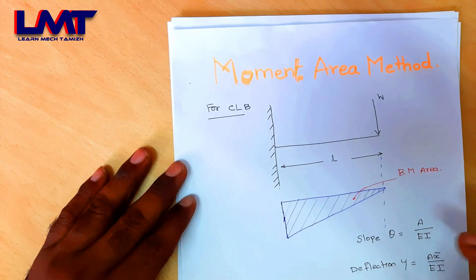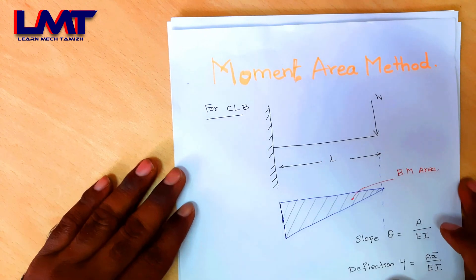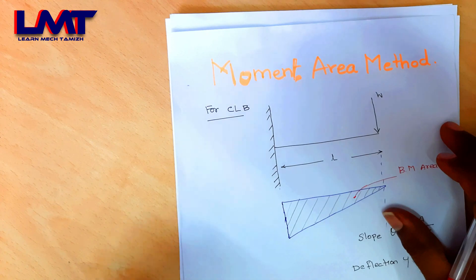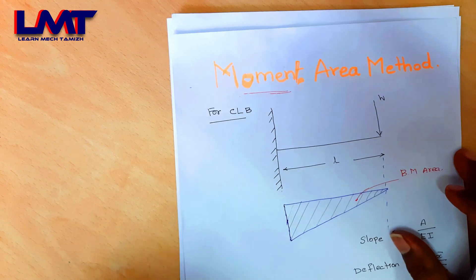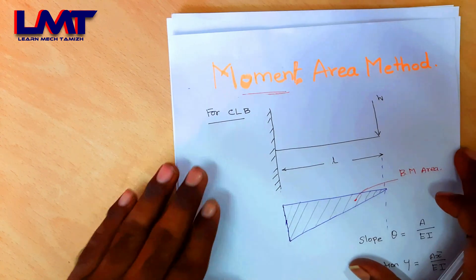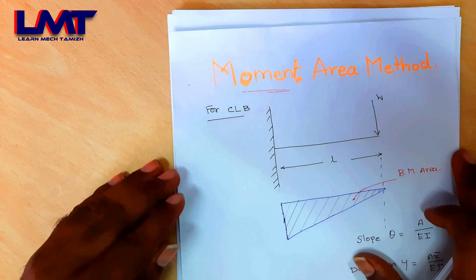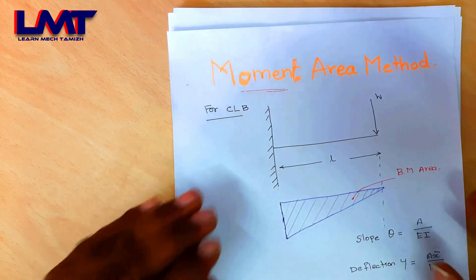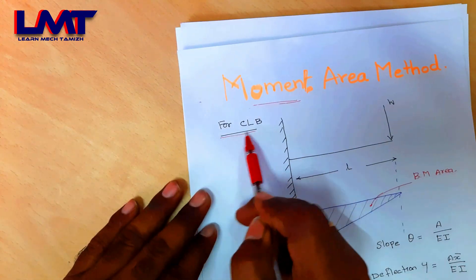Now we will talk about the third method: the Moment Area Method. This is a very simple method for finding slope and deflection. It works best under simple loading conditions — point loads and uniform cross-section.